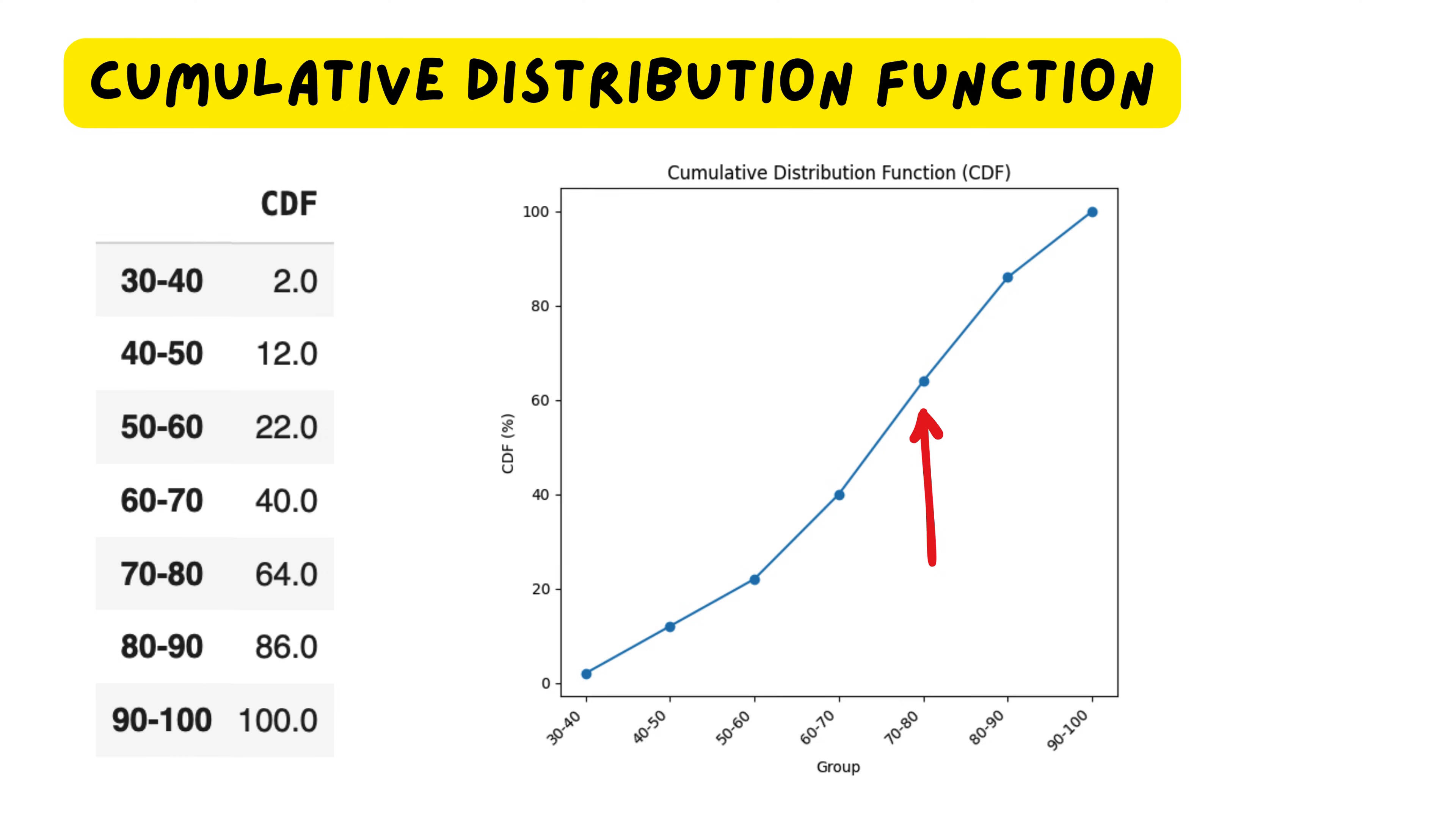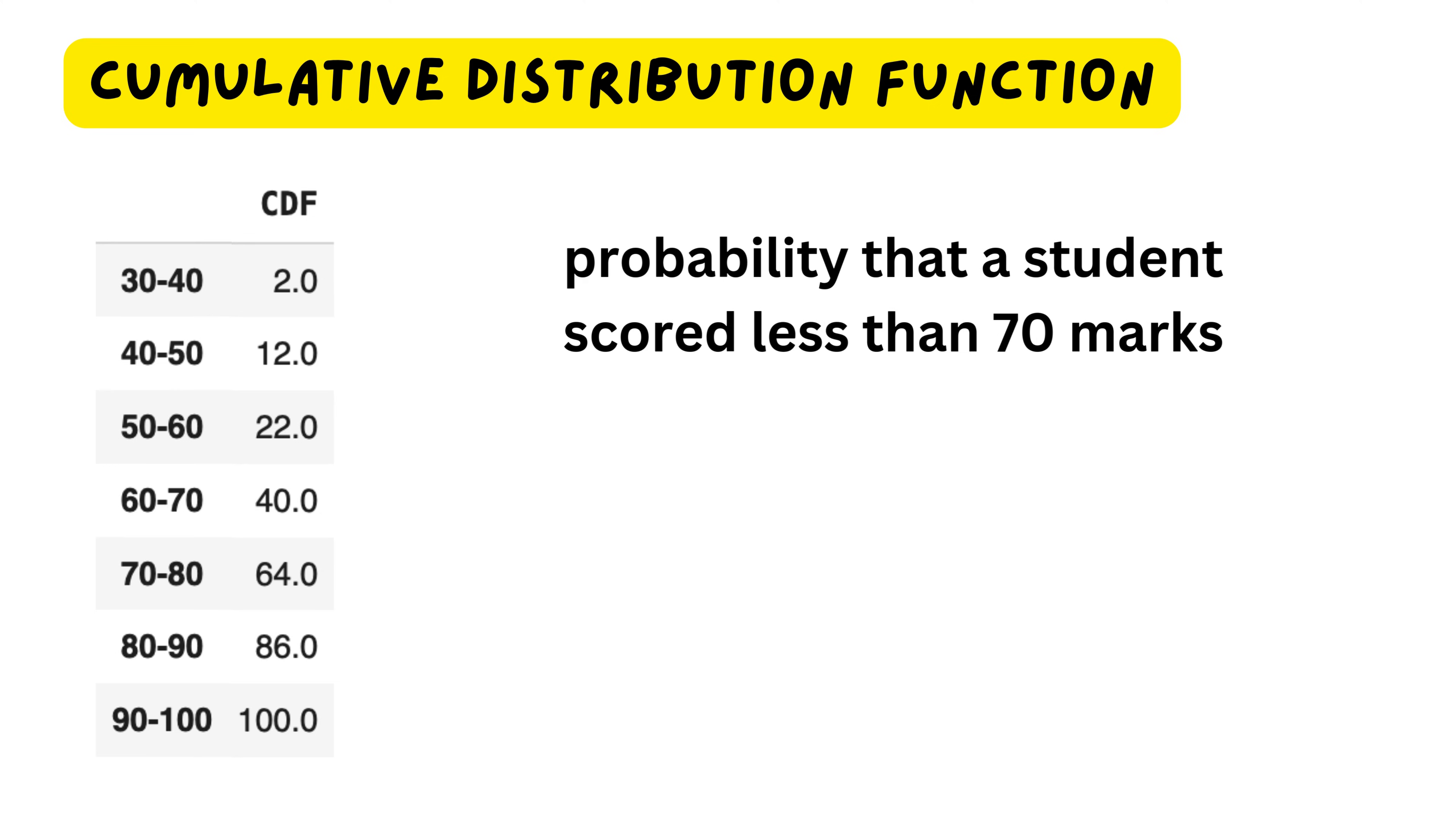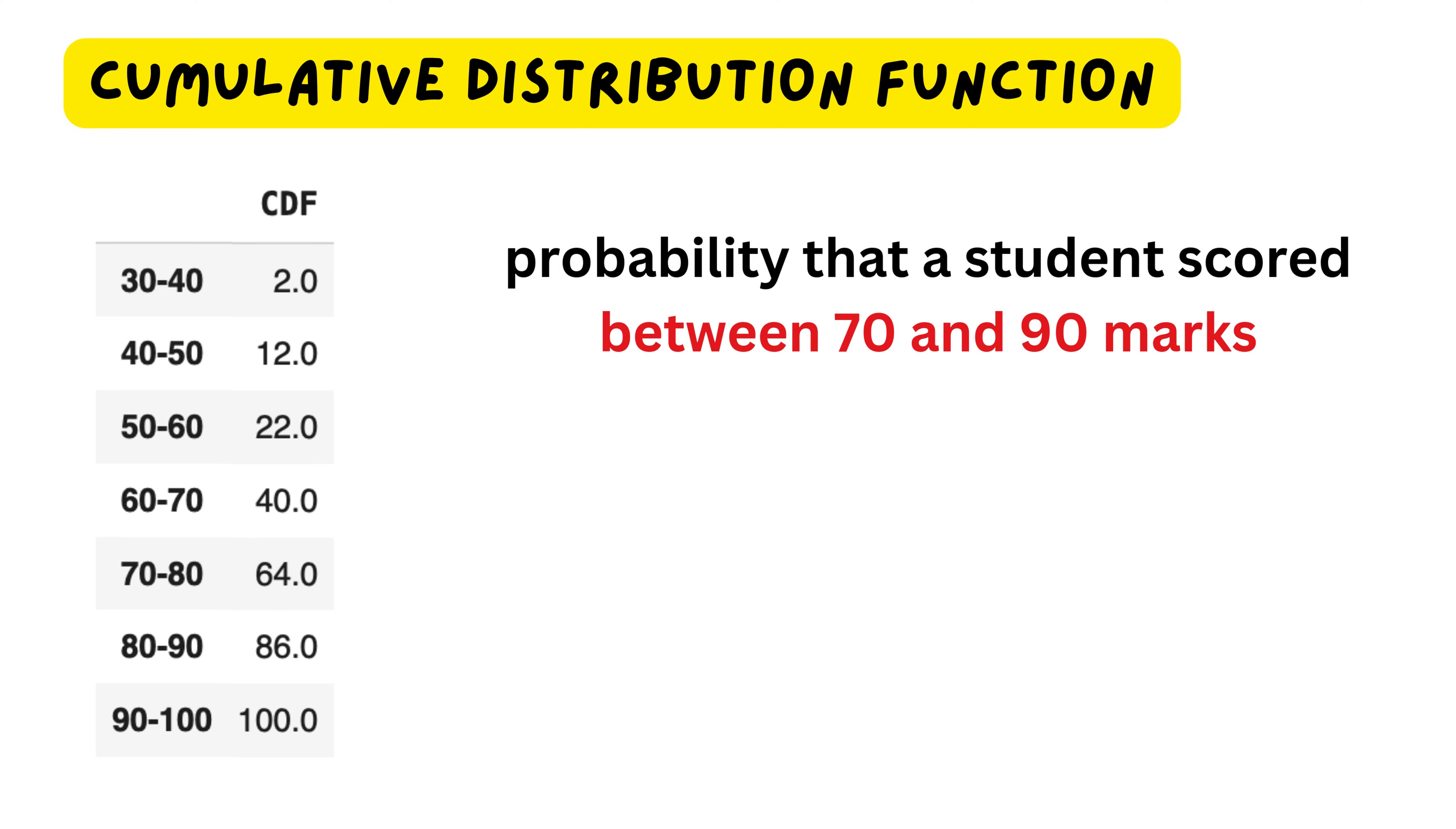The CDF is useful because it helps us answer probability-based questions. For example, if we want to know the probability that a student scored less than 70, we look at the CDF value at 70, which is 40%. If we want to know the probability that a student scored less than 90, the CDF value at 90 is 86%. If we want to find the probability that a student scored between 70 and 90, we simply subtract the CDF value at 70 from the CDF value at 90, which gives 46%. This makes the CDF a powerful tool for understanding how scores are distributed.